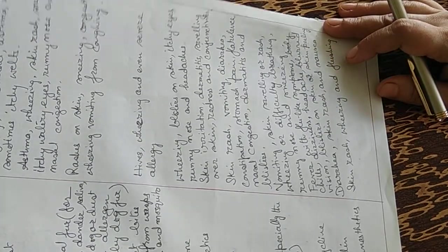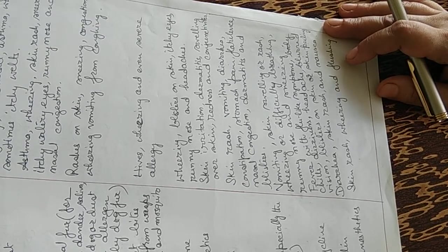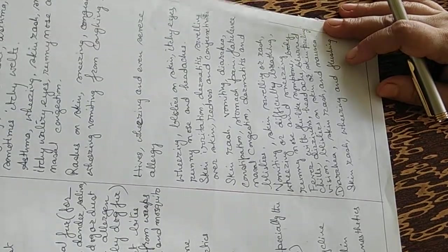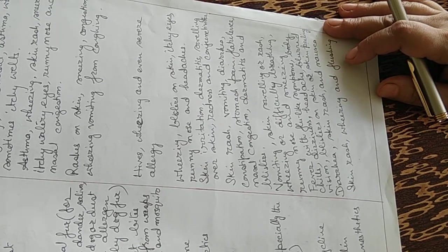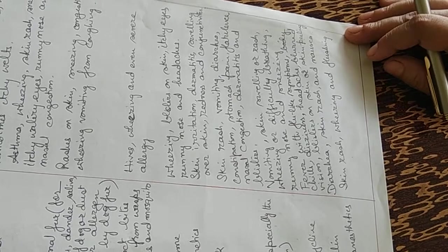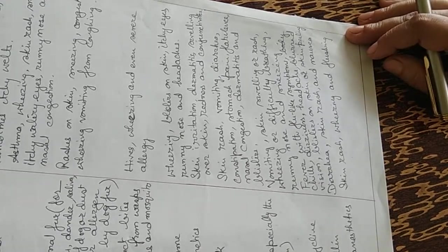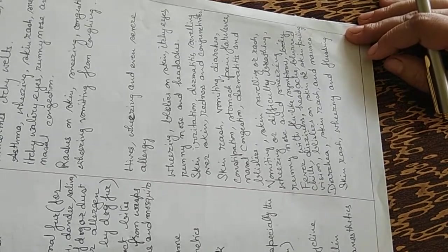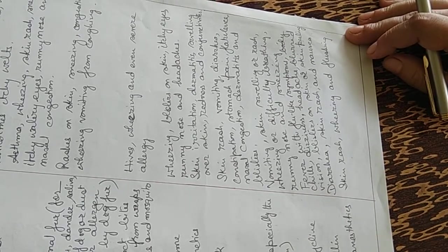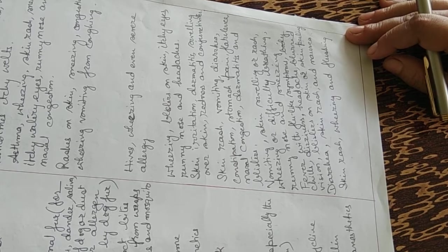Milk also acts as allergen in some cases producing skin rash, vomiting, diarrhea, constipation, stomach pain, flatulence, nasal congestion, dermatitis and even blisters. Egg also causes allergic response, especially the albumin. It causes vomiting, skin swelling or rash, wheezing or difficulty in breathing, running nose and sneezing.